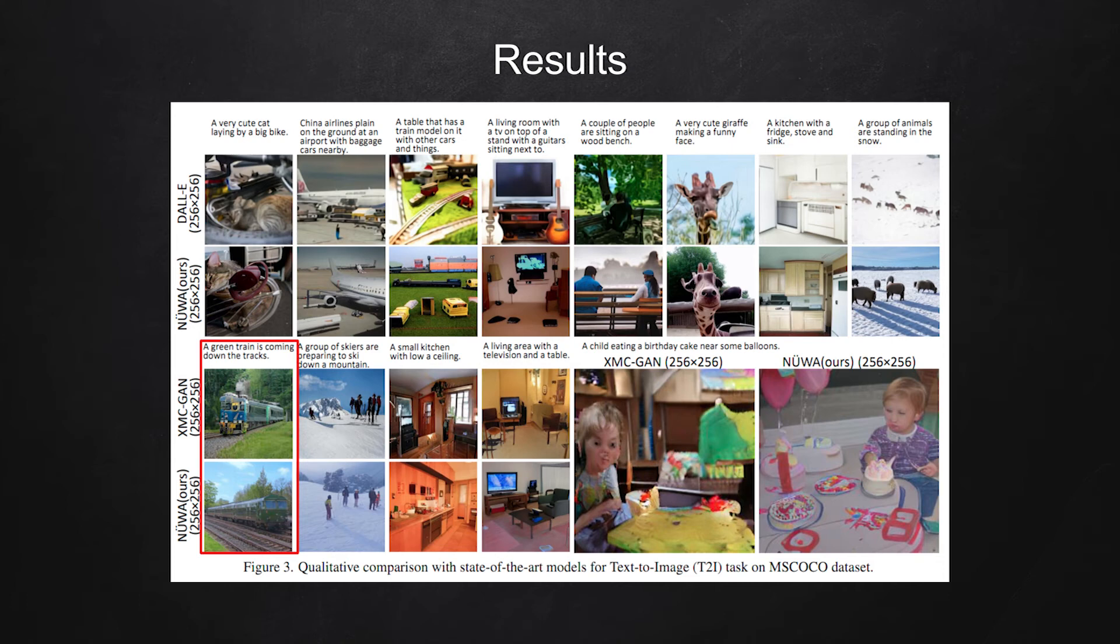It takes a sequence of text that says 'a green train is coming down the tracks.' If we see the result from XMCGAN, the train doesn't look green. It has a color of blue at the front, so I don't think it's a good output. However, if we see the result of the model NEWA, we can see that the color of the train is definitely green here.